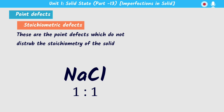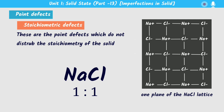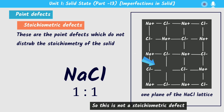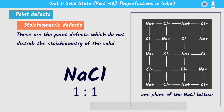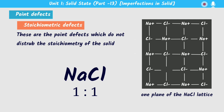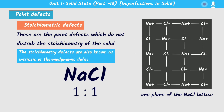If we remove some sodium positive ions from the crystal, the ratio will be disturbed. For example, if there are 10 sodium and 10 chloride ions, removing one sodium makes it 9 to 10, which is not one to one. In stoichiometric defects, the ratio is preserved — the formula of the compound remains unchanged. These defects are also known as intrinsic or thermodynamic defects.